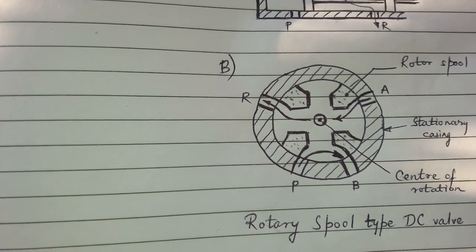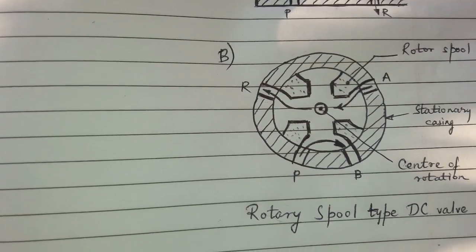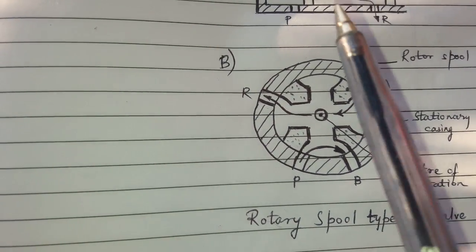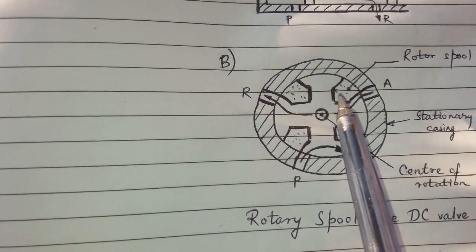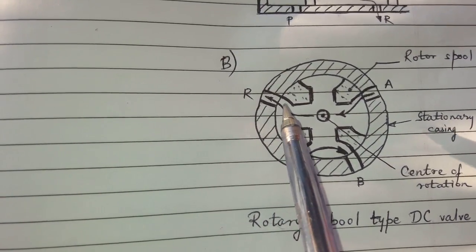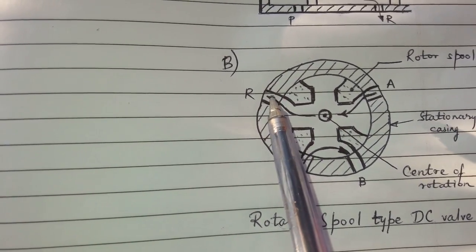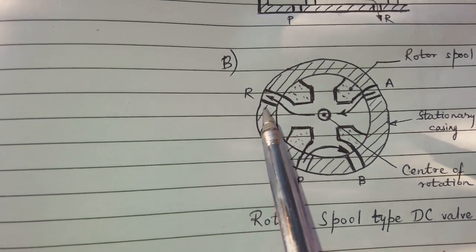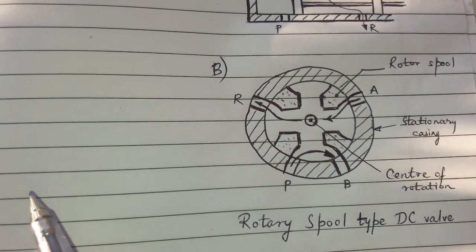Rotary spool type DC valve. Rotary spool valve consists of a rotating spool which aligns it with the ports in the stationary body or the casing.